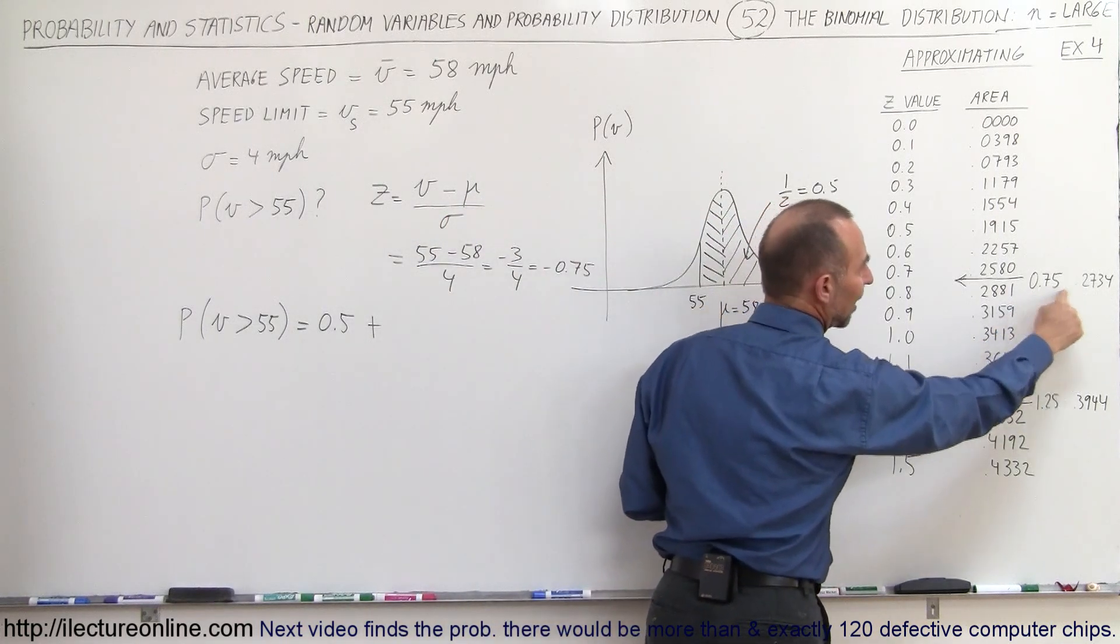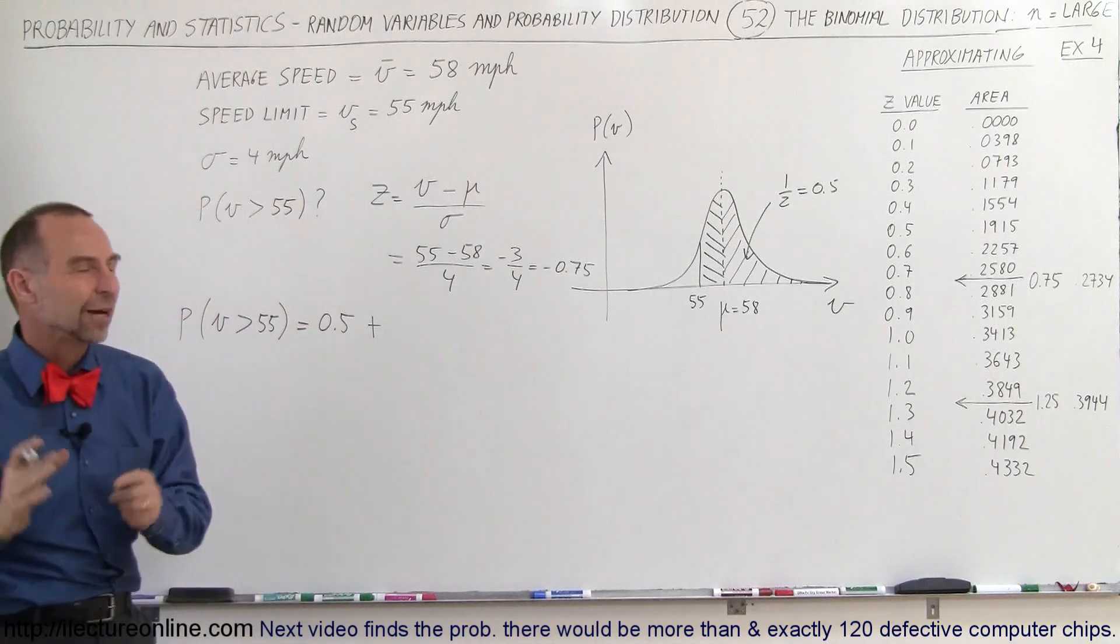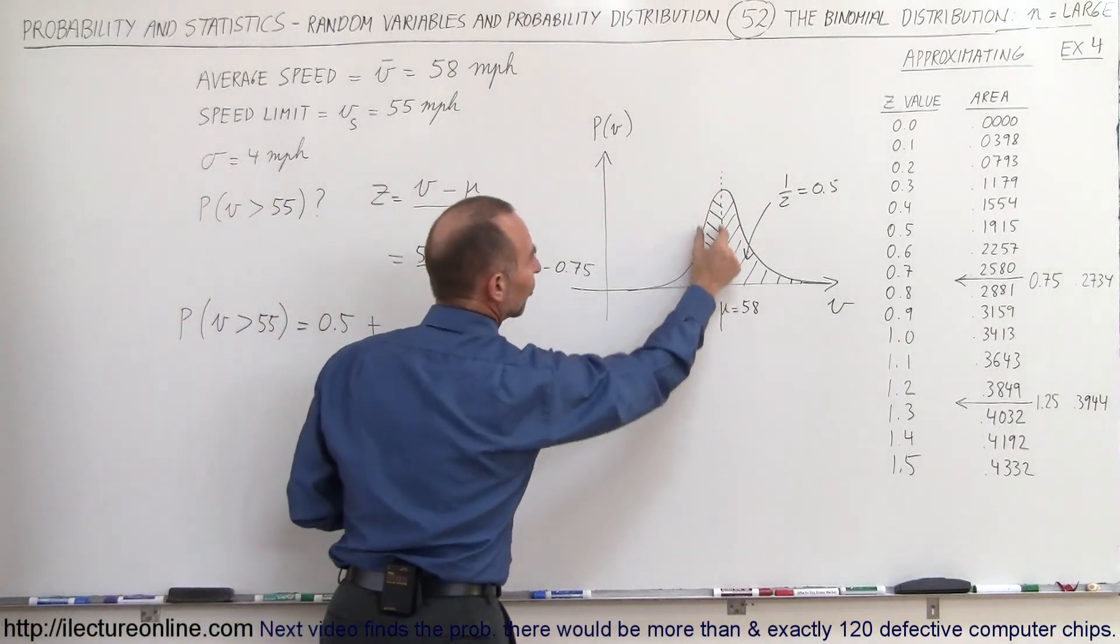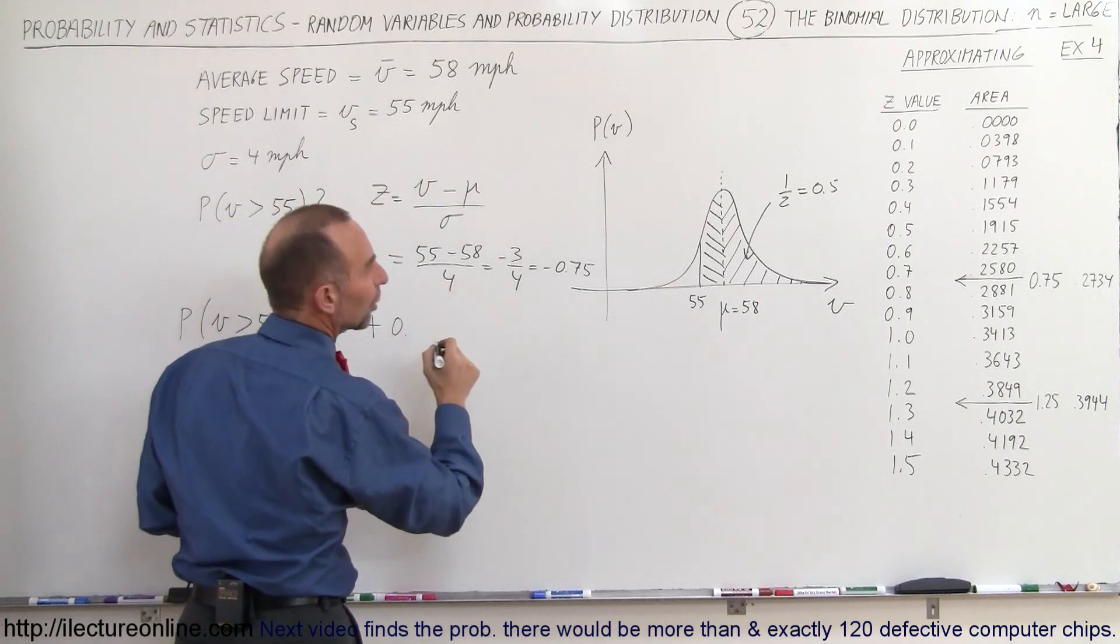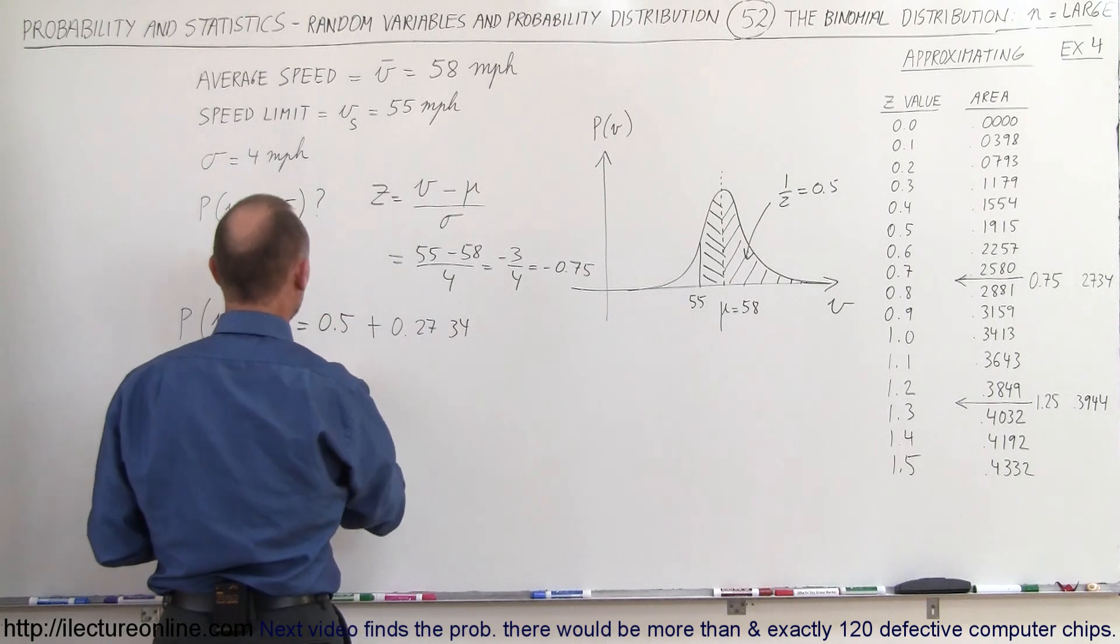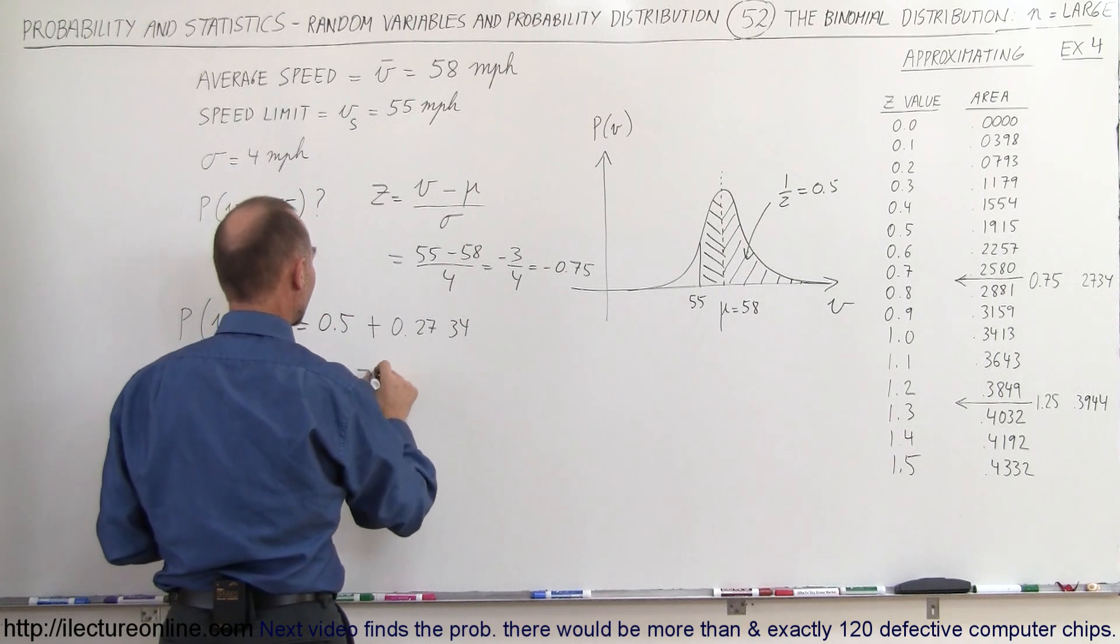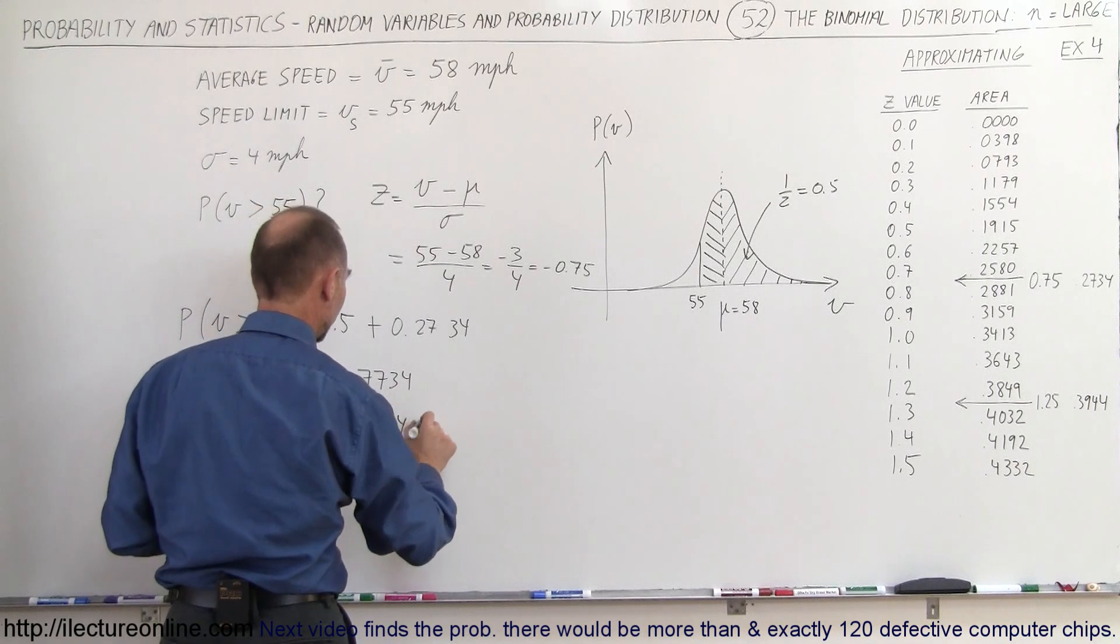Looking at the chart, 0.75 corresponds to a probability of 0.2734, which is the area underneath the curve of this section of the graph. So it's 0.5 plus 0.2734, which equals 0.7734, or 77.34 percent.